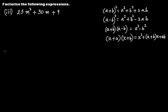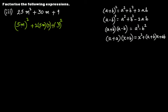For 25m² + 30m + 9: write 25m² as (5m)² since 5×5 = 25 and 9 as 3². Then 2·(5m)·3 = 30m, confirming this is of the form a² + 2ab + b² = (a + b)². So the factorization is (5m + 3)².